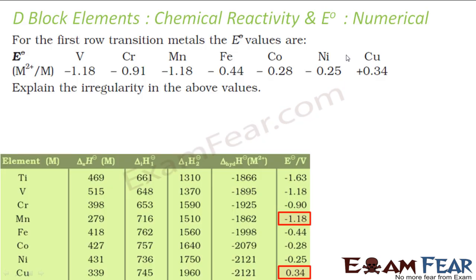The question says for the first row transition metals, E° values are given for M²⁺ to M, and there is an irregularity. If you see, the value decreases and then increases here, decreases three times, and then increases here. So there are two irregularities. We will explain why there is irregularity.